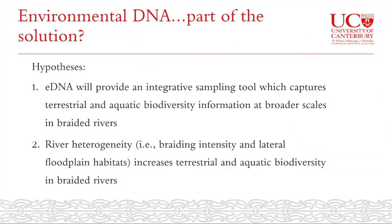My first hypothesis is that environmental DNA will provide an integrative sampling tool which captures terrestrial and aquatic biodiversity information at broader scales in braided rivers. My second hypothesis is that river heterogeneity — for example braiding intensity and lateral floodplain habitats — increases terrestrial and aquatic biodiversity in braided rivers. This can inform management and improve the status of our biodiversity in braided rivers.